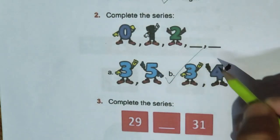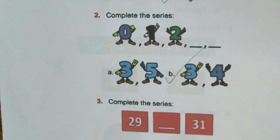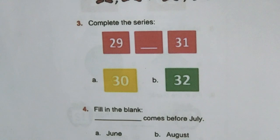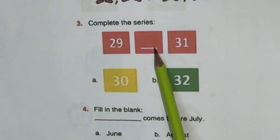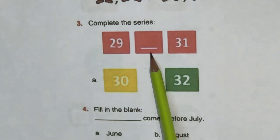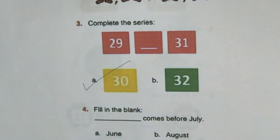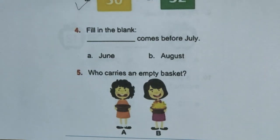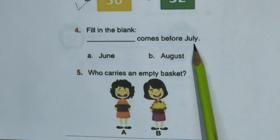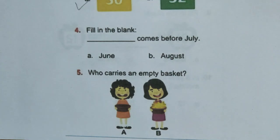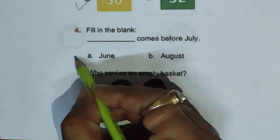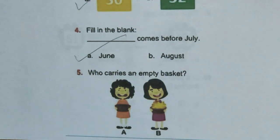Question 3: Complete the series — 29, dash, 30. Obviously this will be 30 and then 31, so option C is the right answer. Question 4: Fill in the blank — dash comes before July. Which month comes before July? Obviously June, hence answer A.